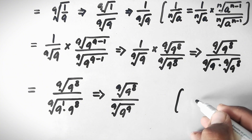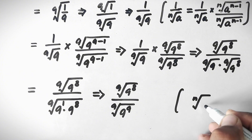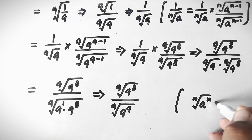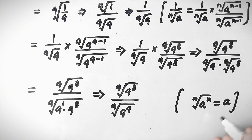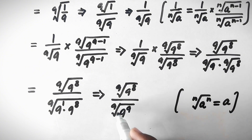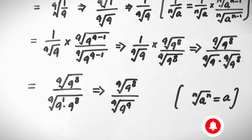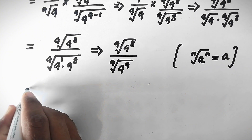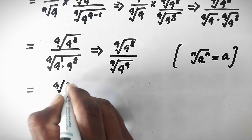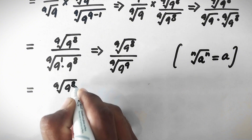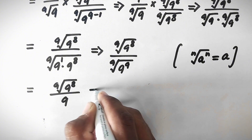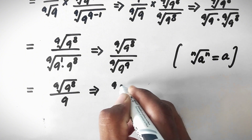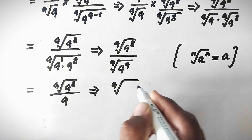Now we apply the property that the nth root of a to the power n equals a. Applying this to the denominator, the 9th root of 9 to the power 9 equals 9. So we have the 9th root of 9 to the power 8, divided by 9.